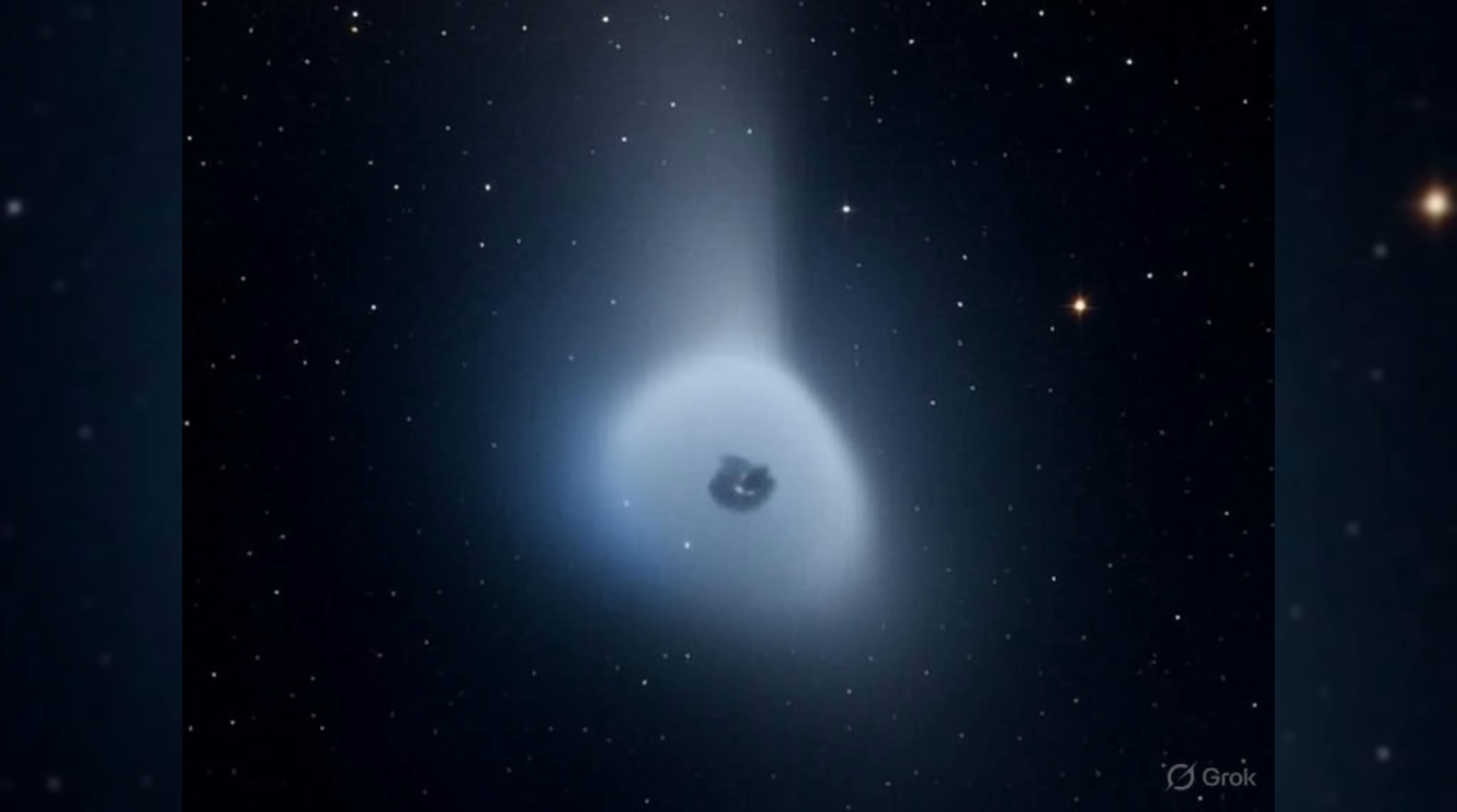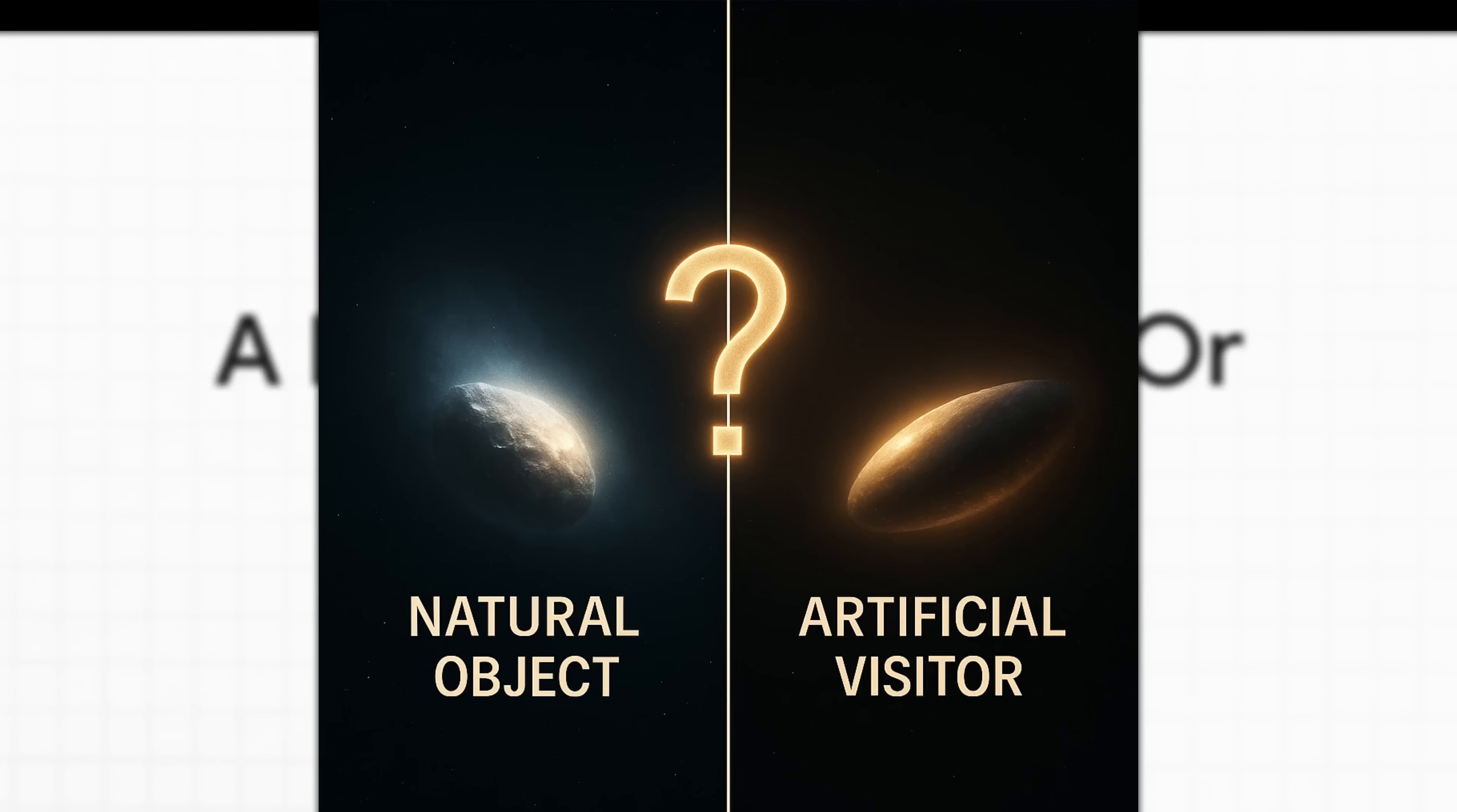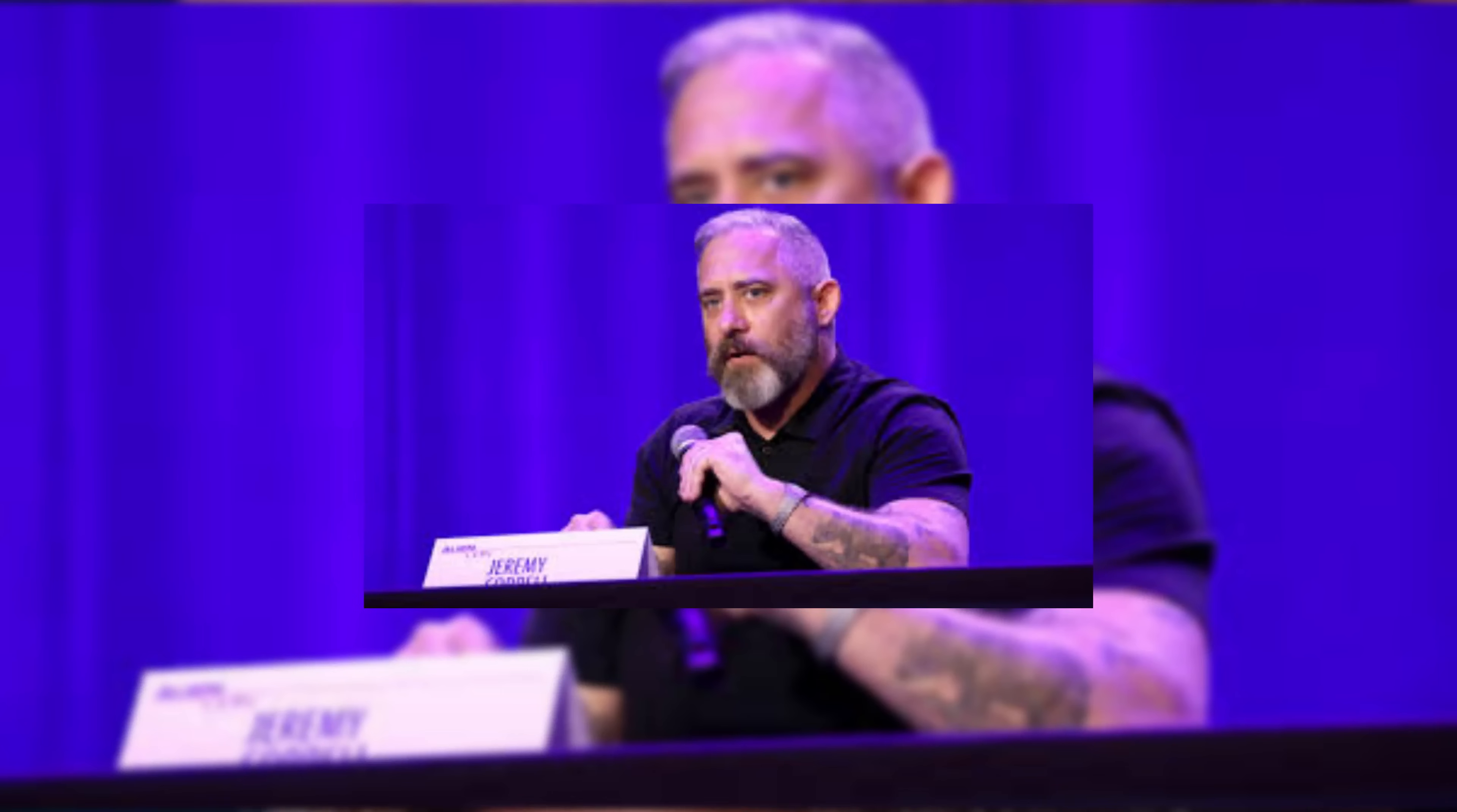And so that leaves us right here, with this huge question hanging in the air. Is 3i Atlas just a really fun space rock, as one scientist put it, an unusual but ultimately natural comet? Or are we seeing evidence of something else, a piece of technology from another civilization, making its way through our solar system, shining a light for all of us to see? For now, the verdict is out in the cosmos.